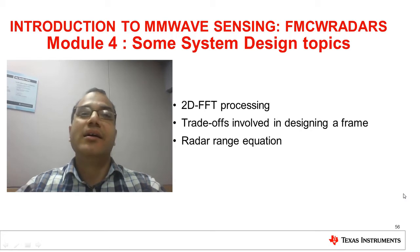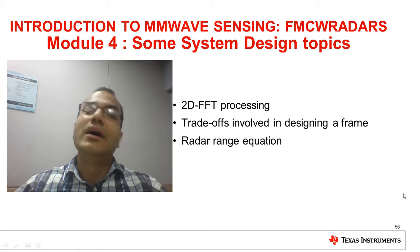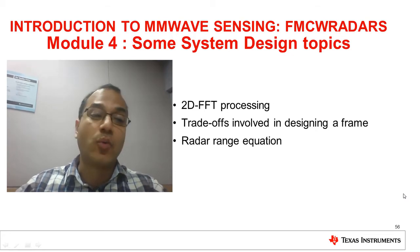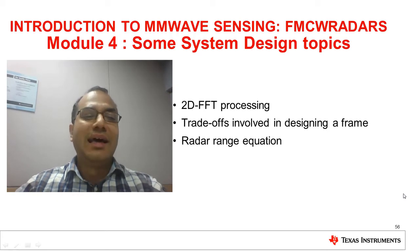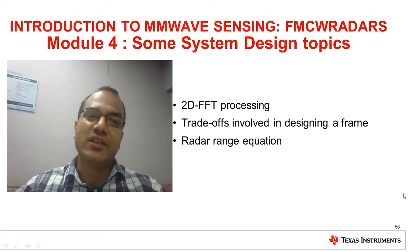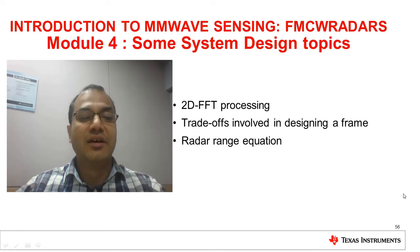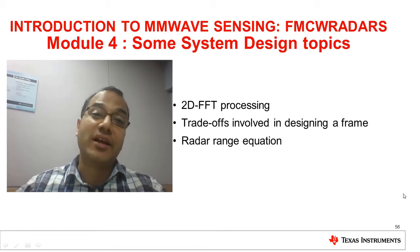First, we'll take a step back and review the signal processing flow for range and velocity estimation. Then, we'll try and design a transmit signal which meets certain specified requirements in terms of range resolution, maximum range, velocity resolution, and maximum velocity. We'll get a feel for some of the trade-offs involved in doing that. Finally, we'll look at what is often called the radar range equation, which is kind of a link budget for radar and relates parameters such as the output power and the antenna gain to the maximum distance that the radar can see.